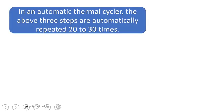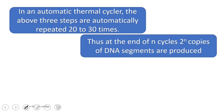In an automatic thermal cycler, the above three steps are automatically repeated 20 to 30 times. Thus, at the end of n cycles, we get 2 raised to n copies of DNA segments, which are in millions.